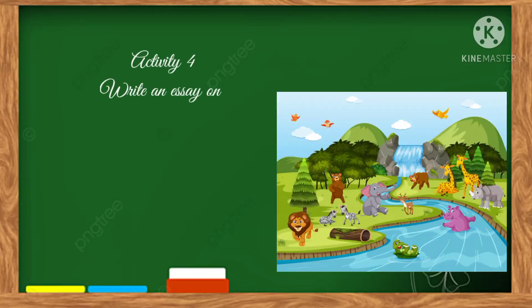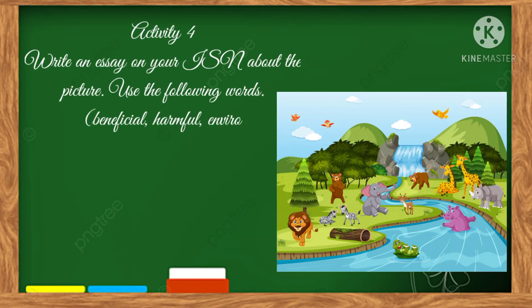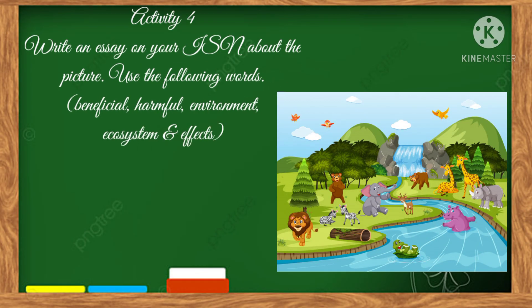For our last activity, write an essay or composition in your ISN about the picture below. Make sure to use the following words: beneficial, harmful, environment, ecosystem, and effect. Focus on the interactions among living organisms and their effects on the environment.